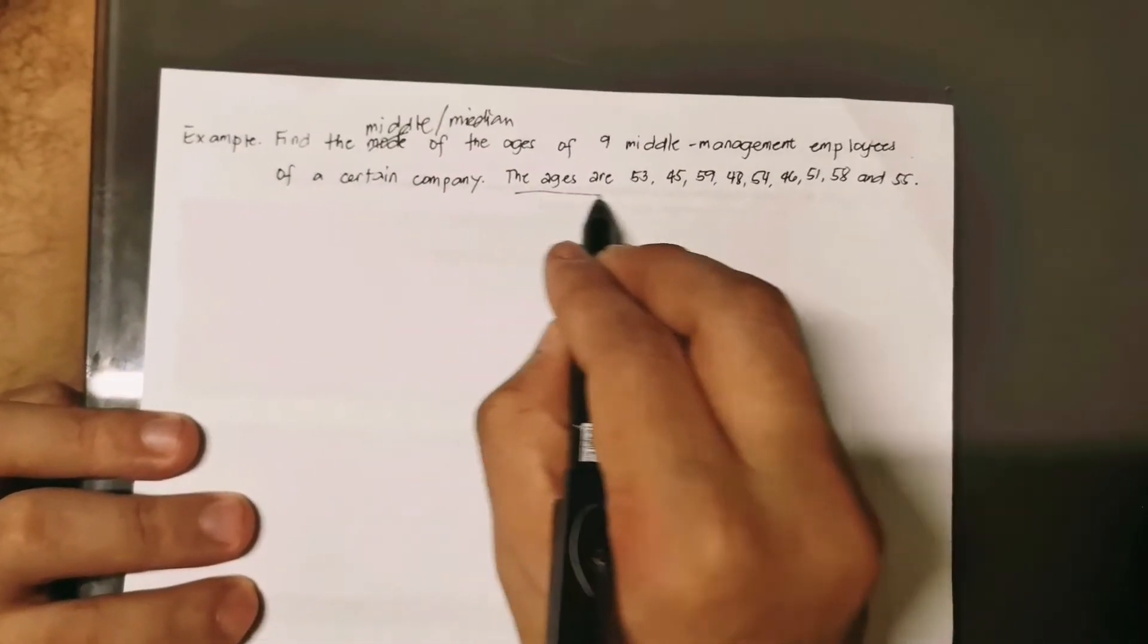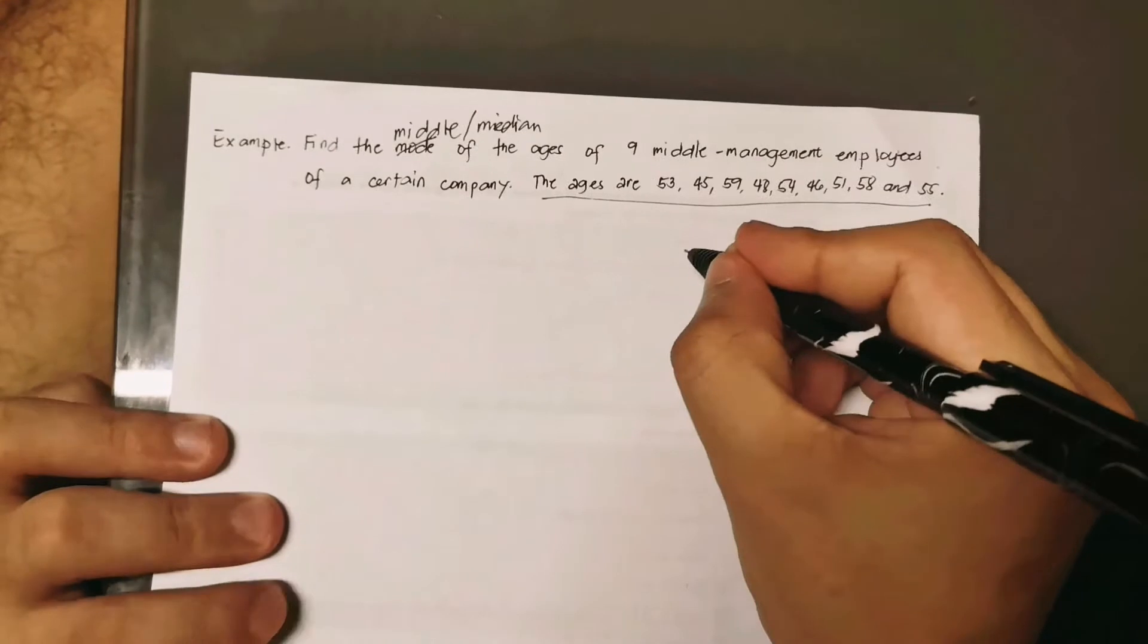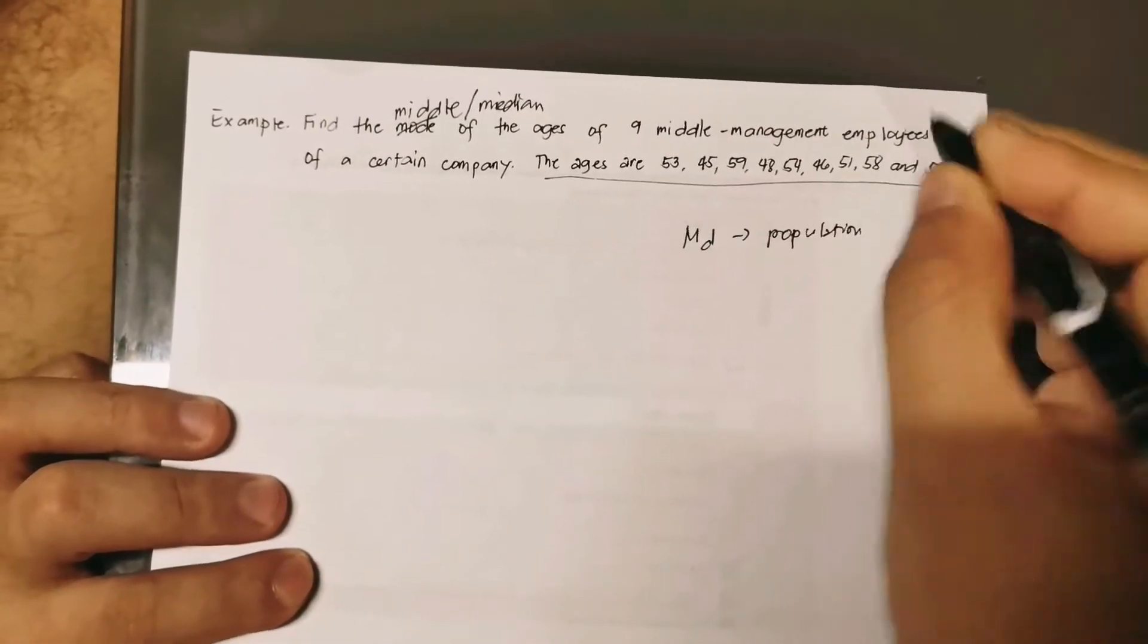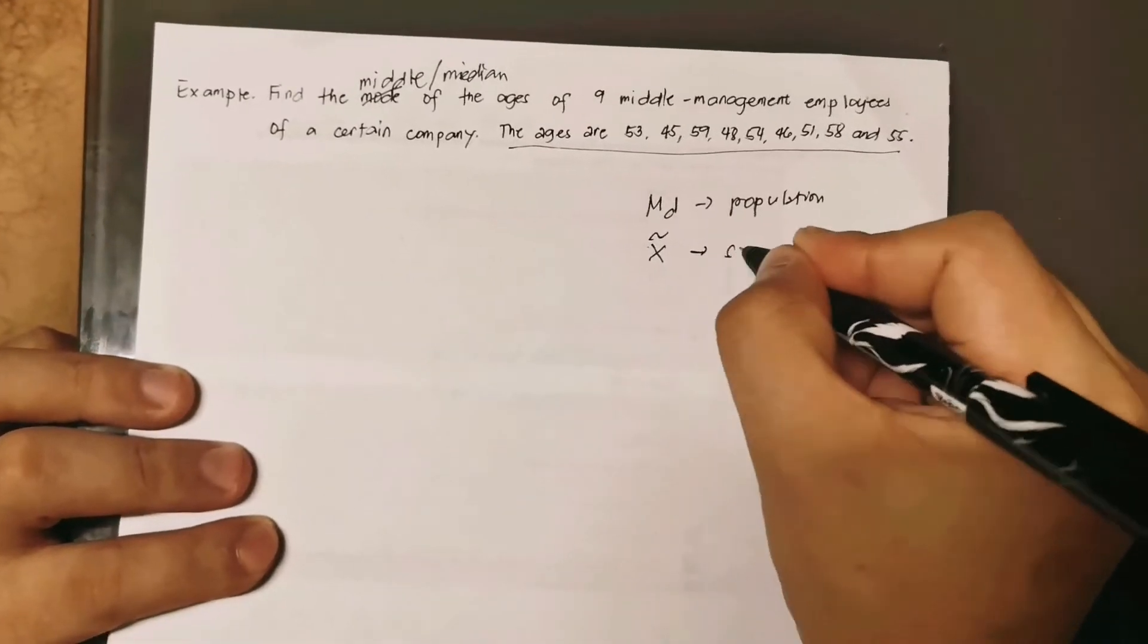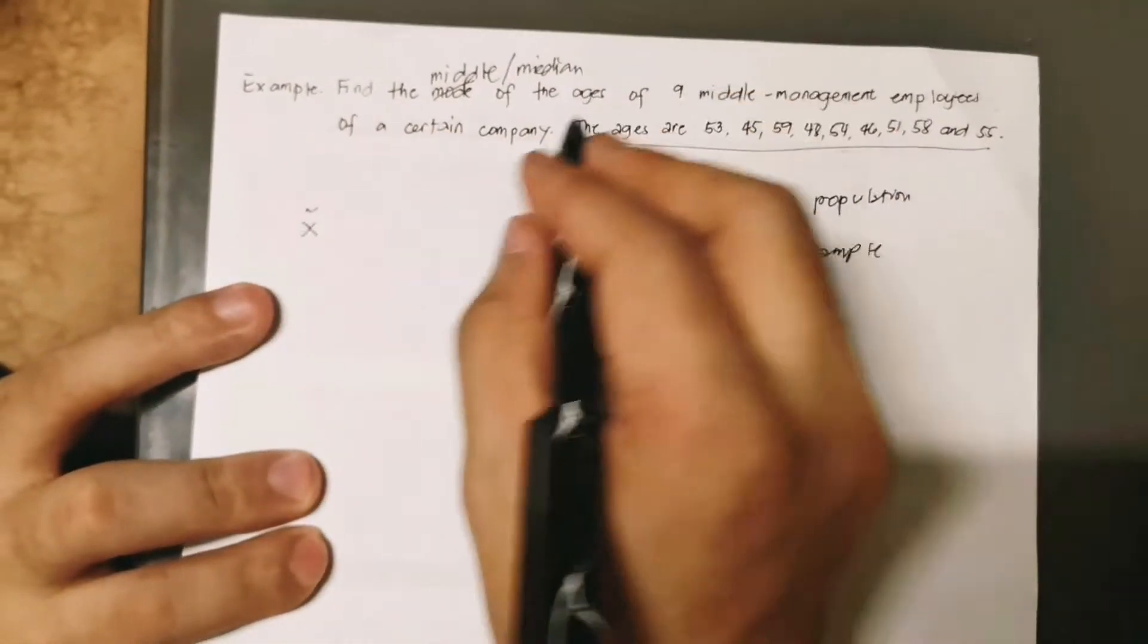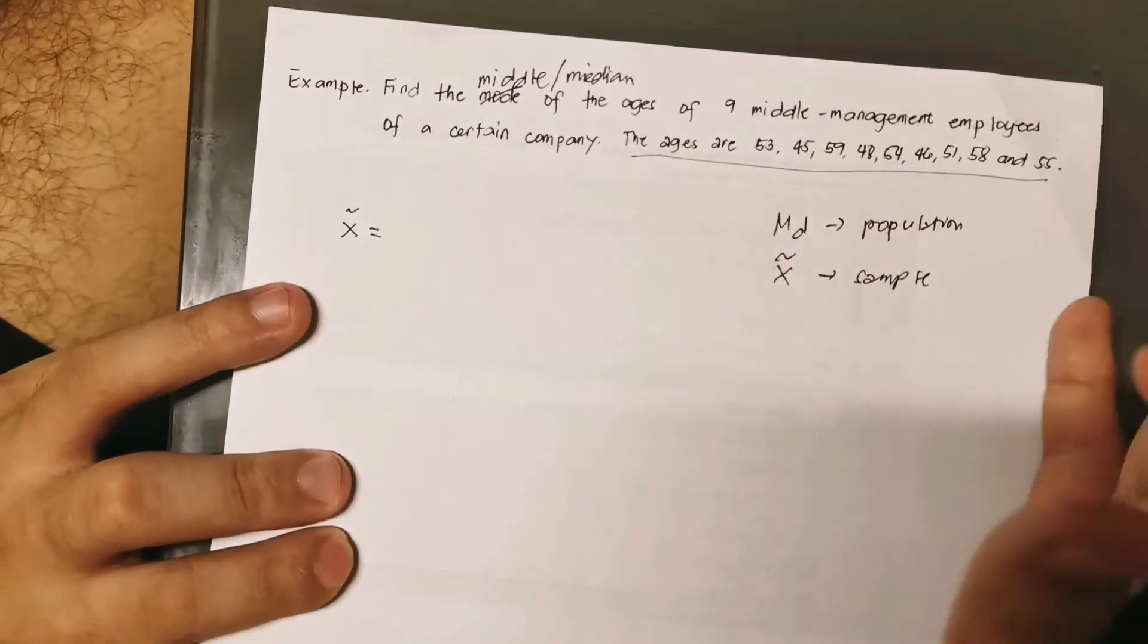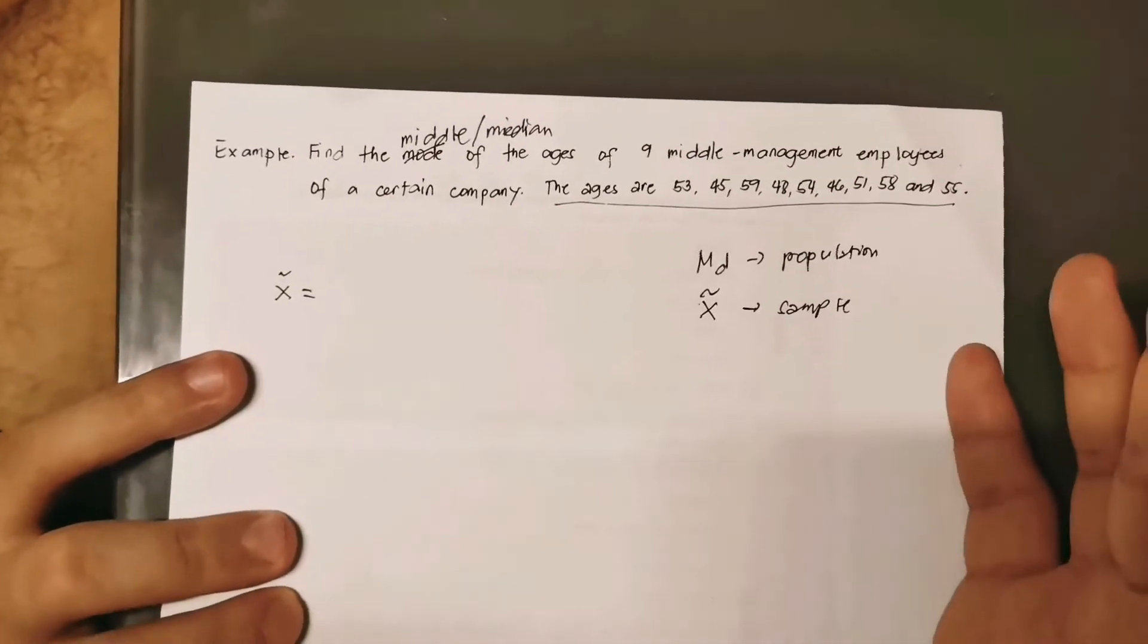These are the ages of the nine middle management employees. Quickly, our median notation: normally you have MD for population and then you have x tilde for sample. We are asked now to find the x tilde for the nine middle management employees. I can give you a long explanation with the formula, but there is a shorter and easier way of doing it.